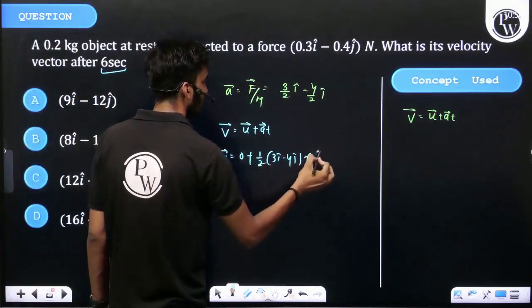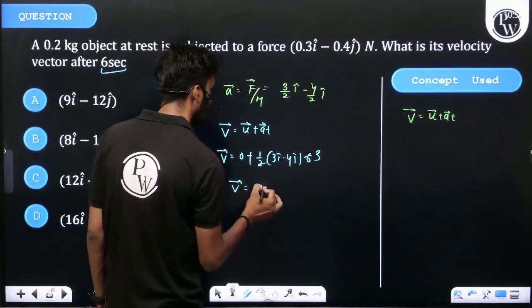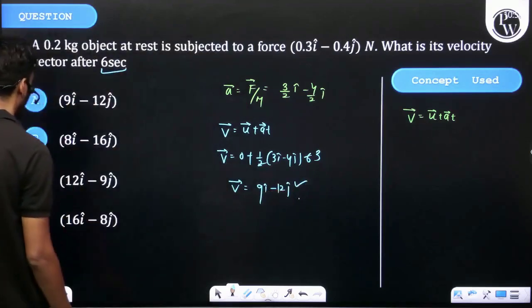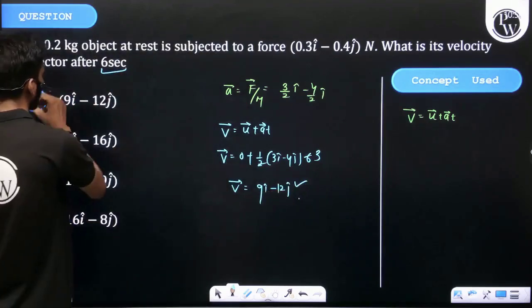Cancel out 3. Then velocity vector is equal to 9 I cap minus 12 J cap, the correct answer in meters per second. 9 I cap minus 12 J cap, so option A is correct.